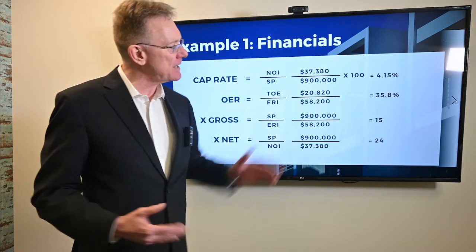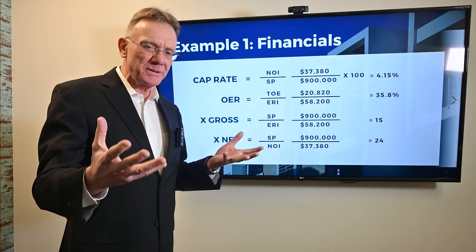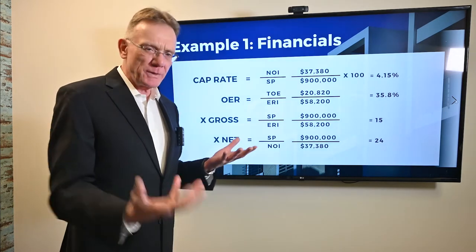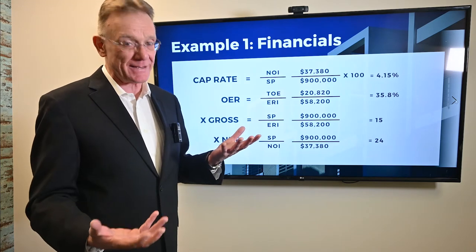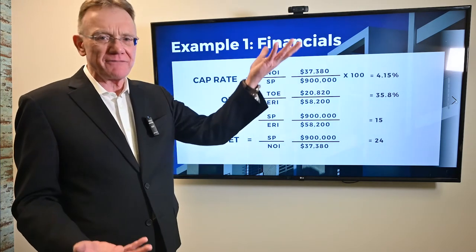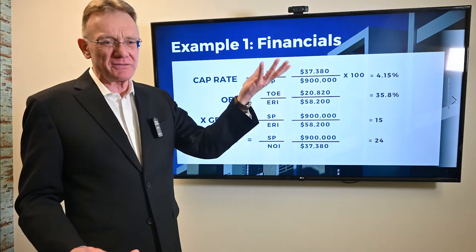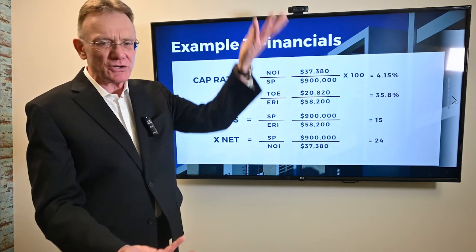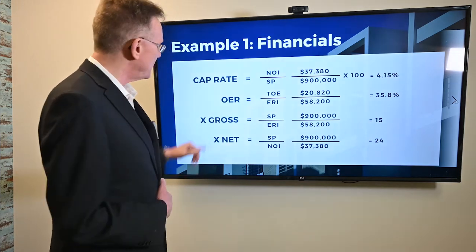This is an average number, maybe a little below average. On the low end you could have a 25% operating expense ratio, which is fantastic. On the high end you could have around 50%, meaning half your income goes to expenses. So those are your parameters: 25% to 50%.